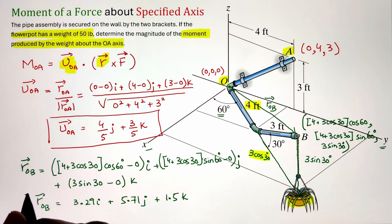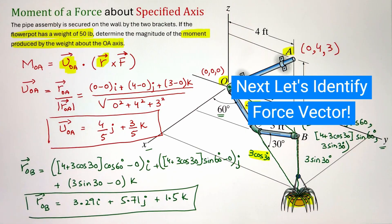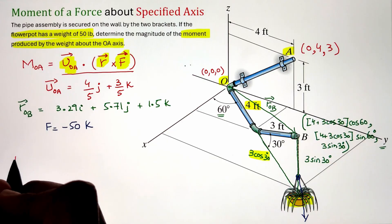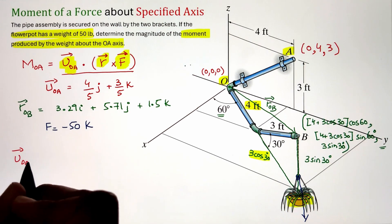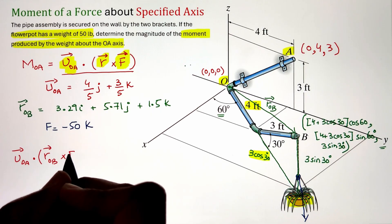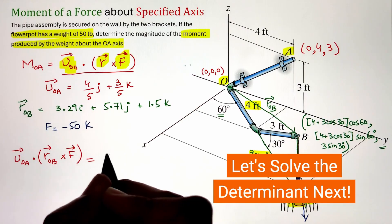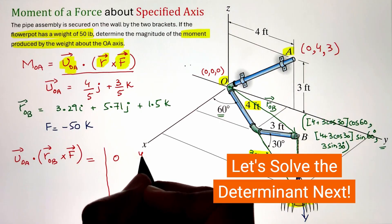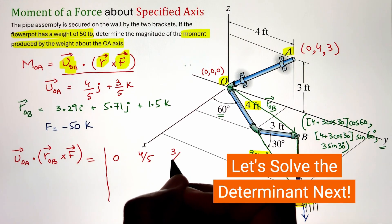Once we have all three vectors let's do our scalar triple product. Now this triple scalar product equals the determinant in which the first row is basically the components of the first vector we have. In this case since it is the unit vector about OA axis, our first row will become 0, 4 over 5, and 3 over 5. Next the second row is basically our moment arm which we have already calculated as 3.29I plus 5.71J plus 1.5K.